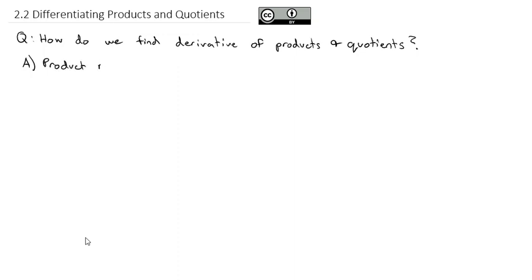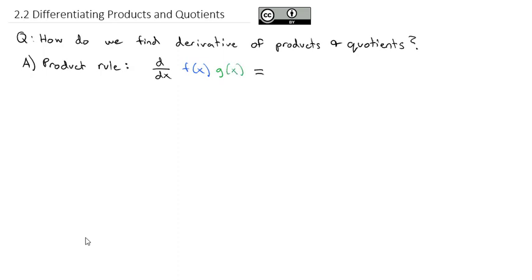First is the product rule, which says if we want to take the derivative of a product of two functions — two things that are multiplied together — we'll color code this: f(x) is blue and g(x) is green. The derivative of that product is the derivative of the first part times the second part, plus the derivative of the second part times the first part. So we take the derivative of the first times the second, plus the derivative of the second times the first.